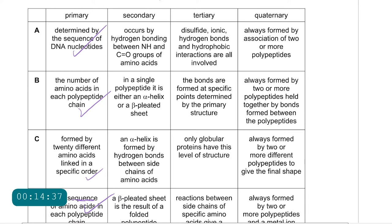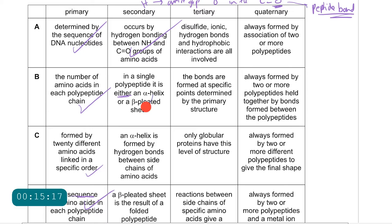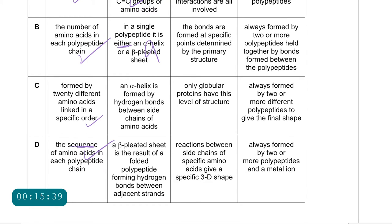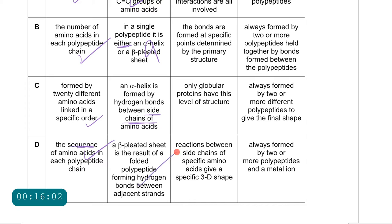For the secondary structure: it involves hydrogen bonding between the H in the amine group and the O in the carboxyl group, and has nothing to do with side chains. A: hydrogen bonding between NH and CO groups of amino acids in a single polypeptide — correct. B: it is either an alpha helix or a beta-pleated sheet — incorrect because it could be both. C: an alpha helix formed by hydrogen bonds between side chains — incorrect. D: a beta-pleated sheet formed by hydrogen bonds between adjacent strands — correct.